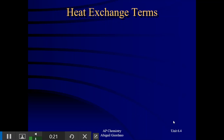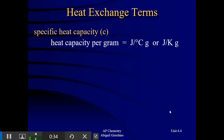Before we get into the math, there are some vocabulary terms that we're going to bring into our calculations, and it's important that you know what these terms mean on a concept basis. The first one is called specific heat capacity, which has a variable of a lowercase c. If you look at the units, that's going to give you an indication of what specific heat capacity is.